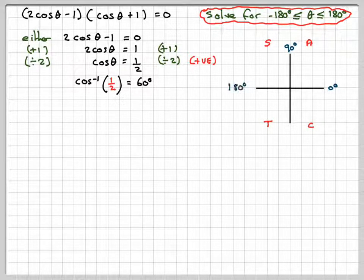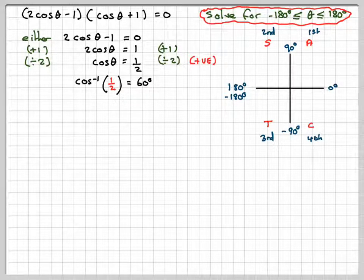And drawing our CAST diagram. You don't necessarily need to write it all out, but because we're solving from minus 180 to 180, we've got 0, 90, 180 and then this way round minus 90, minus 180. Again, you don't have to write this all in first, second, third quadrant.